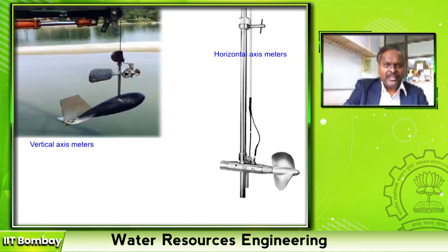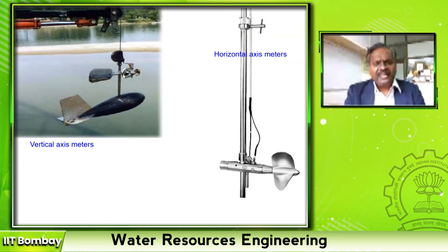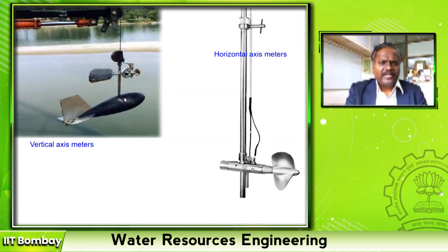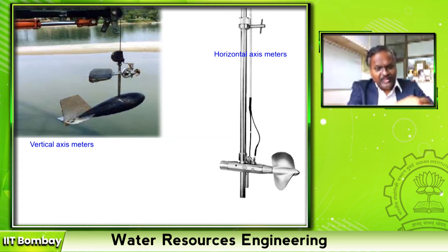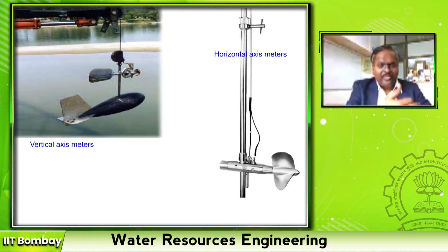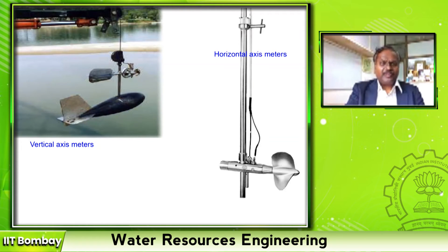Current meters are mechanical instruments used to measure velocity. There are two types: vertical axis and horizontal axis. The vertical axis type has a series of cups mounted on a shaft with a direction changer and counterweight. This current meter is fixed on a vertical rod and immersed in the water. When water flows, the current makes the series of cups rotate. For a given time period, we count how many revolutions the cups have made. That number of revolutions is then related to the velocity of the flow — this relationship is called calibration of current meters.